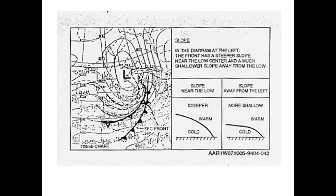Here's an example of a thickness chart showing surface frontal boundaries. In general, the front has a steeper slope near the low center and a much shallower slope away from the low. When we talk about fronts, we talk about steep versus shallow. The bottom right portion of this graphic shows a more steeply sloped front while the very bottom right shows a more shallow slope front. Notice the orientation of that black solid line separating the warm and cold air mass.